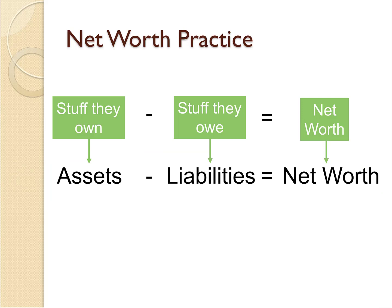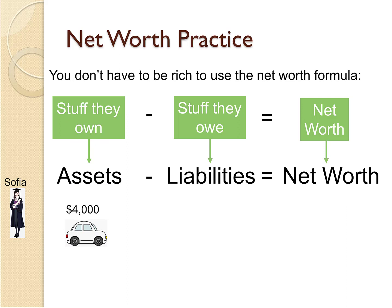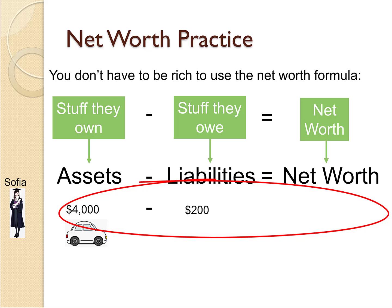Let's get some practice. Working with numbers in the billions is not something most of us can relate to — it probably surprises you, but not many accounting professors are billionaires. But you don't have to be rich to use the net worth formula. Let's say Sophia is a college student. To keep it simple, she only owns one thing: a $4,000 car. But she only has one car payment left, so her liabilities are $200. So what is her net worth? $4,000 minus $200 equals a net worth of $3,800.